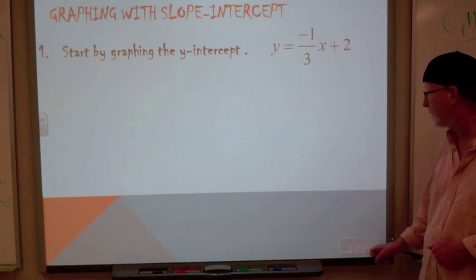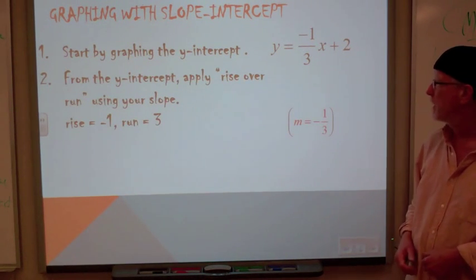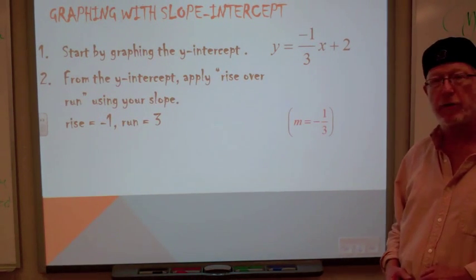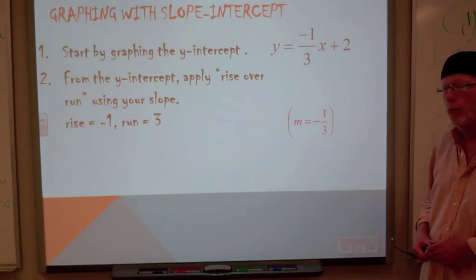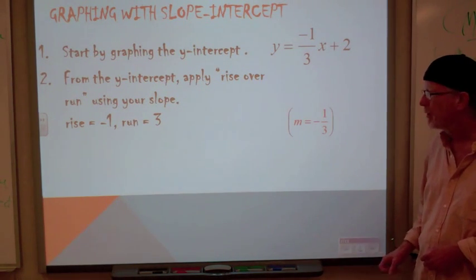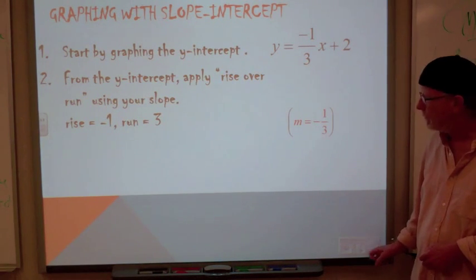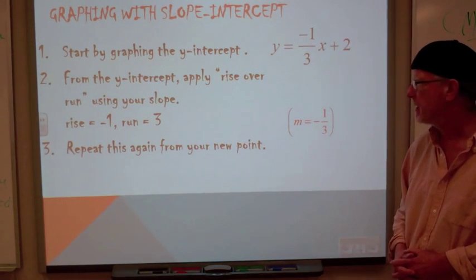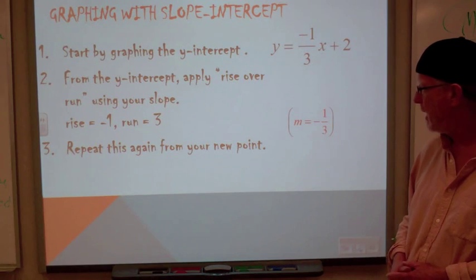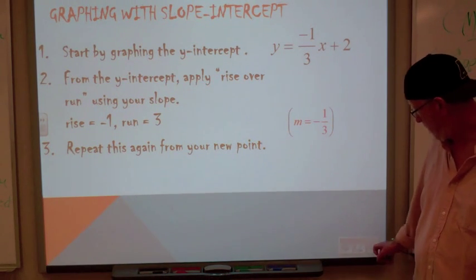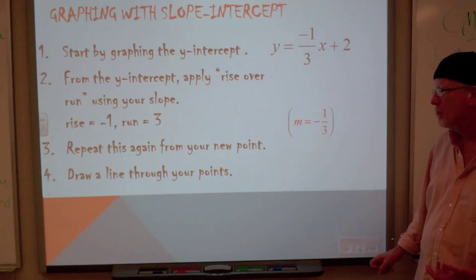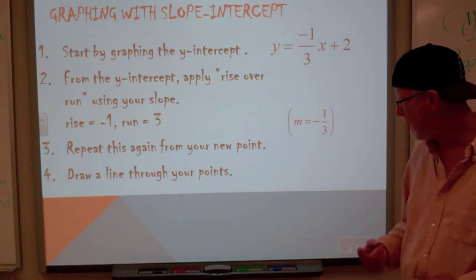What we're going to recommend here is that you start by graphing the y-intercept. That's easy. From the y-intercept, apply rise over run using your slope. The rise here is negative one. The run is three. And you repeat this again from a new point. That will allow you to then draw a line through your points.